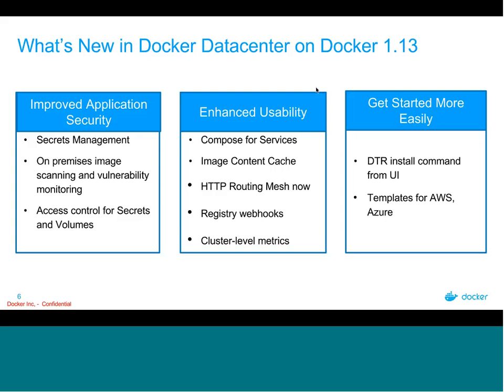The second big security feature is on-premises image scanning and vulnerability monitoring in DTR — the ability to look into a Docker image, run it against known CVE databases, and find vulnerabilities. Third is additional access control features for secrets and volumes. The second major area is enhanced usability, including Compose for Services, Image Content Cache, HTTP Routing Mesh now generally available, Registry Webhooks, and cluster- and node-level metrics from the UCP UI.